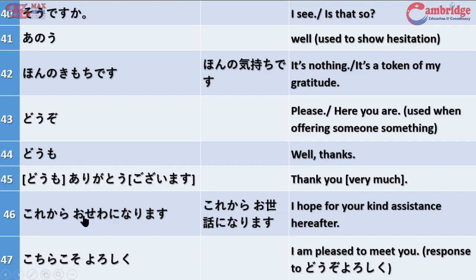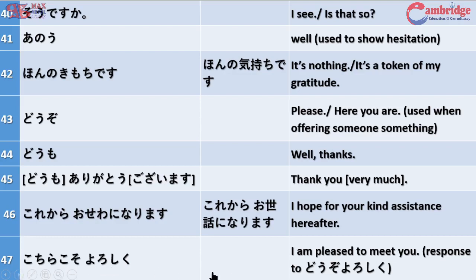When two people meet for the first time and start working together, you say 'kore kara osewa ni narimasu' or 'yoroshiku onegaishimasu.' 'Kochira koso yoroshiku' means 'I am pleased to meet you too.' Now we will move to the grammar section.